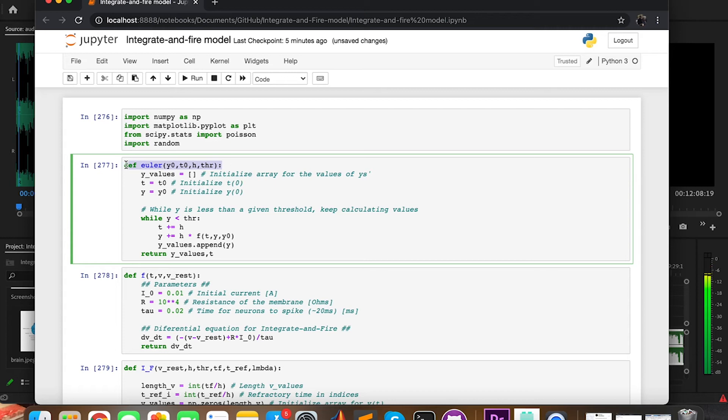The first thing we want to do is create a function that implements Euler's method. As I mentioned, Euler's method implements this formula, so we're going to define a function called Euler that has as parameters y0 and t0, which are the initial values, then time step h and a threshold thr.